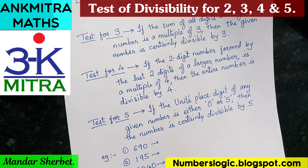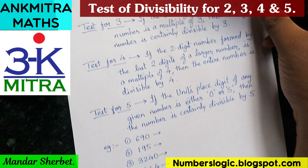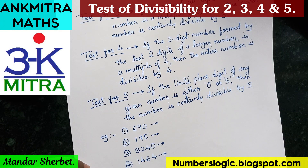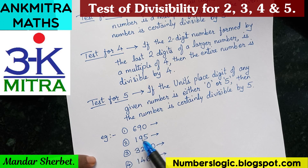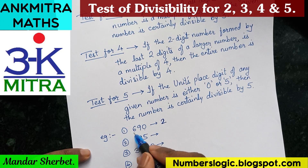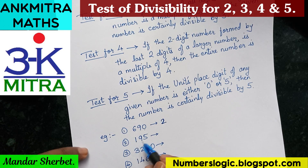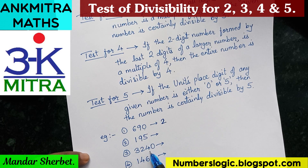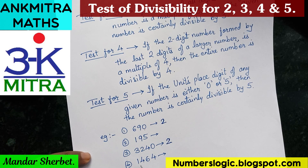Now let's look at a few examples. I've written down four numbers. We'll find out which are divisible by 2, 3, 4, or 5. First number: 690. Applying the test for 2 — the units place digit is 0, so 690 is divisible by 2. For 195, the units place digit is 5, not even, so not divisible by 2. For 3240, the units place is 0, so divisible by 2. For the last number, the units place is 4 — even — so it's also divisible by 2.